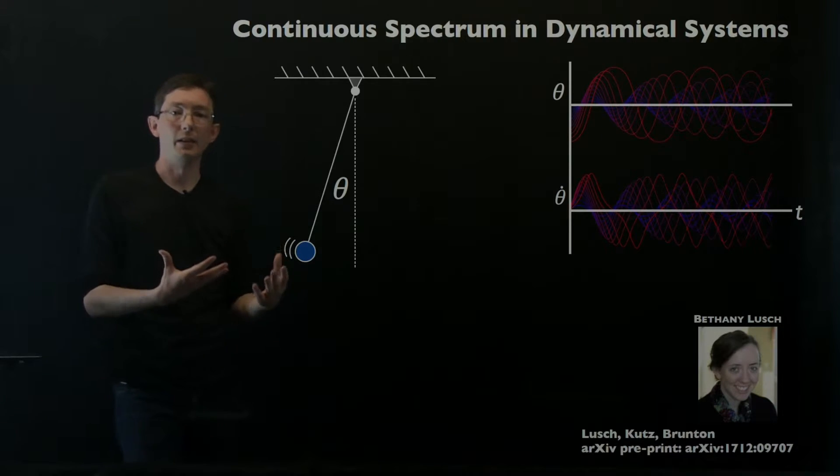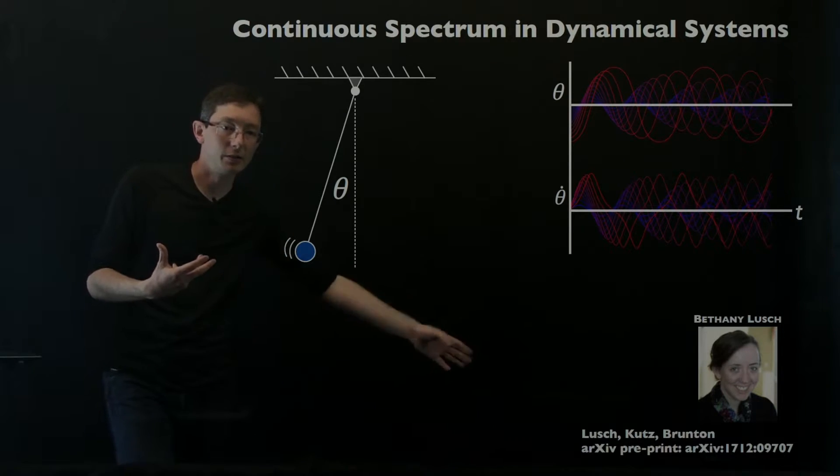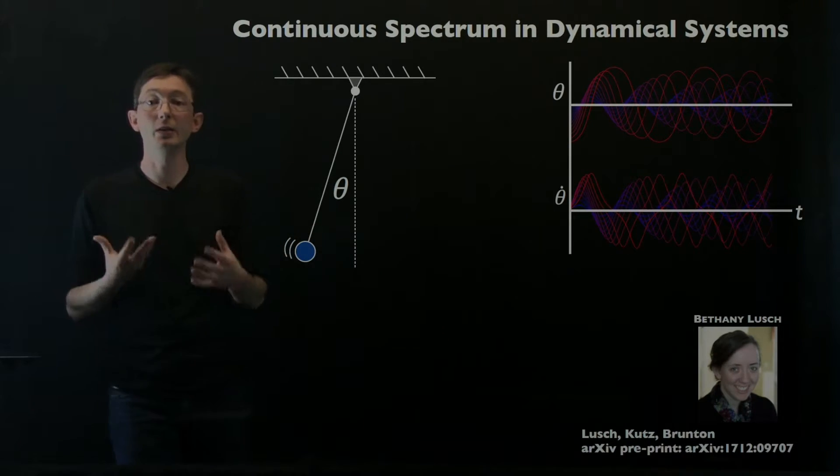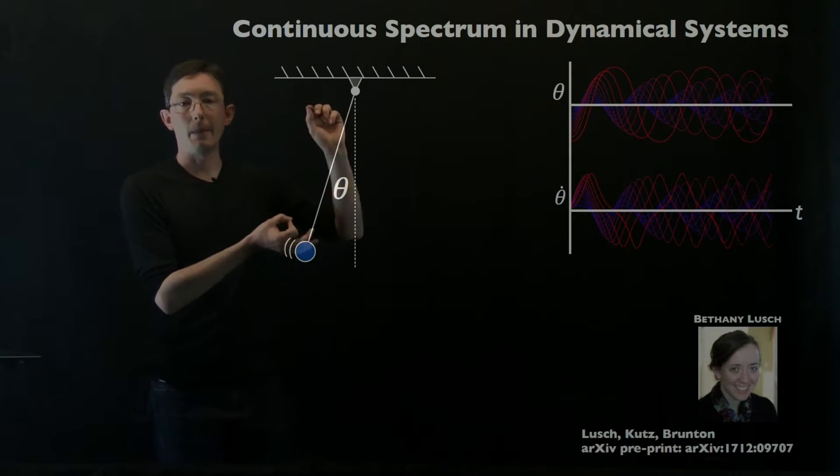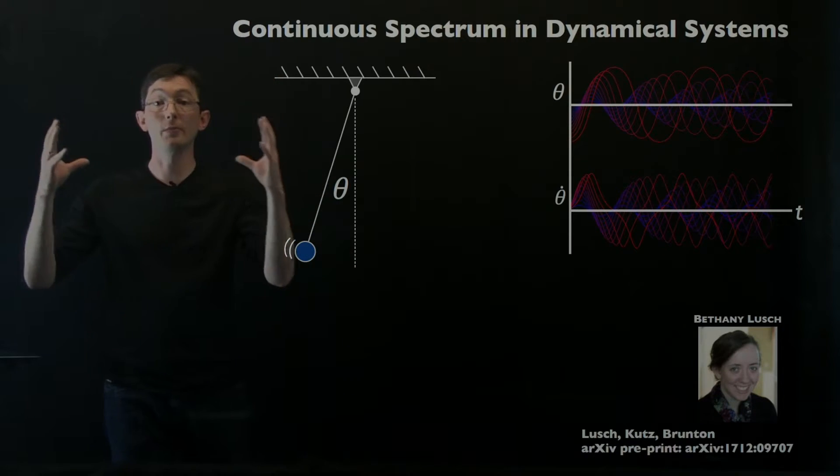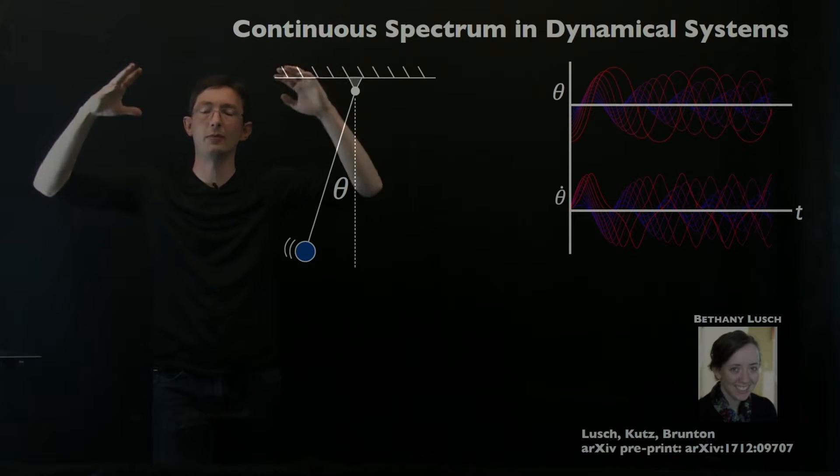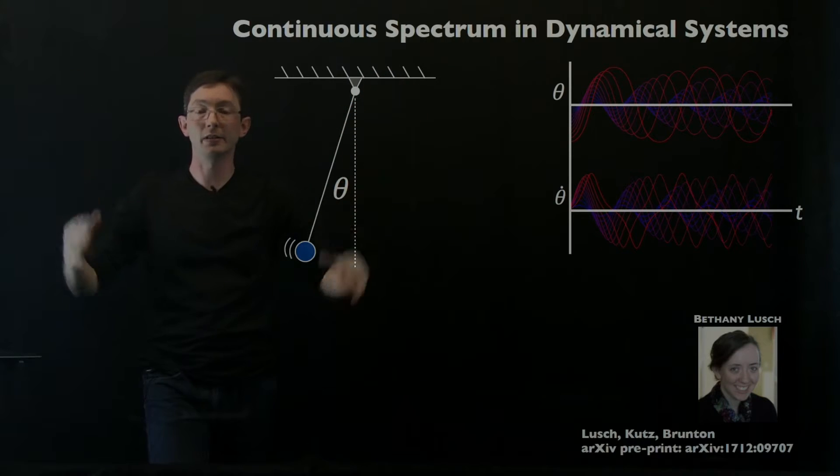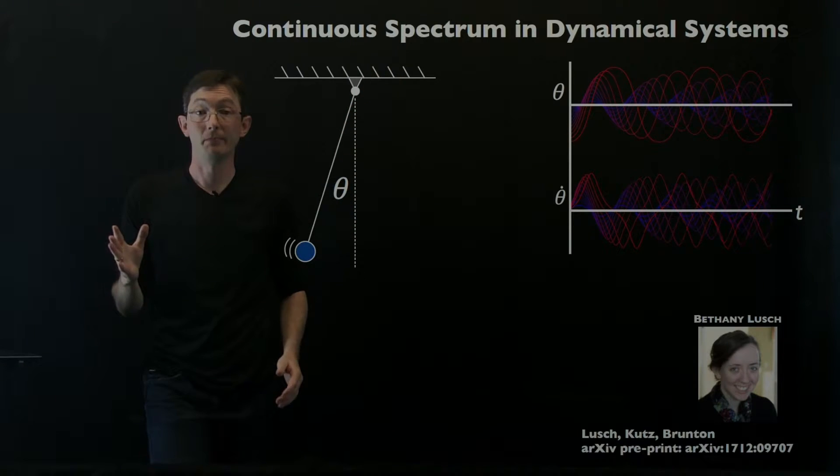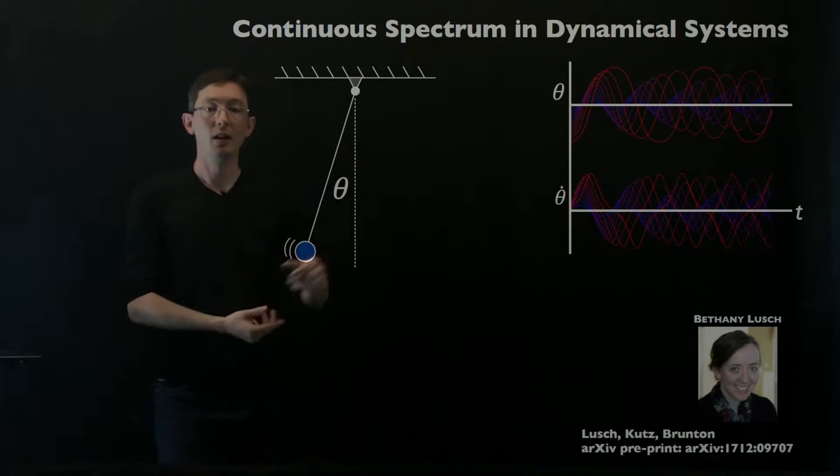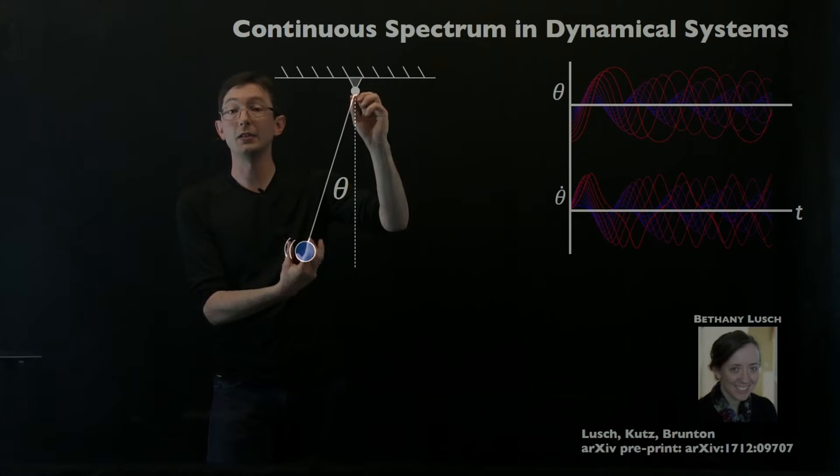In the time since then, we've been working with Bethany Lush. Bethany works with Nathan and myself and we've been thinking about these continuous spectrum dynamical systems. It's frustrated me for a long time that we're developing all of this Koopman operator theory. We're applying it to full turbulence, neuroscience, climate. All of these big non-linear systems where we don't know the answer. I think somehow maybe it's easier to apply this to big systems where we don't know the answer. It's frustrated me for a while that we didn't know what Koopman says about the pendulum.